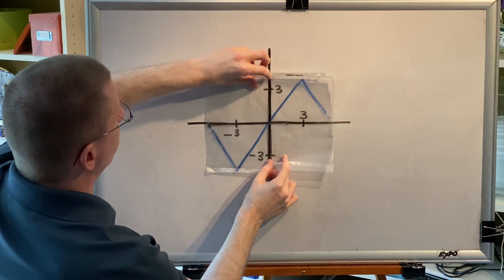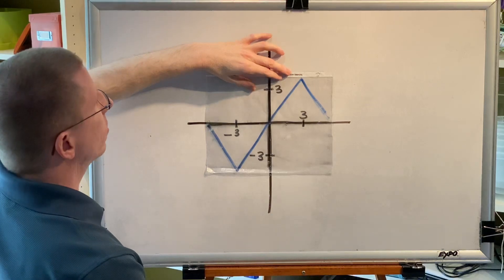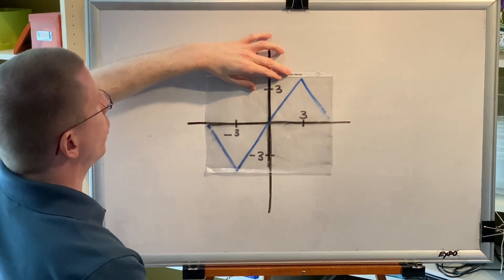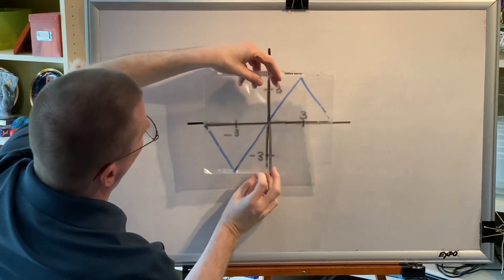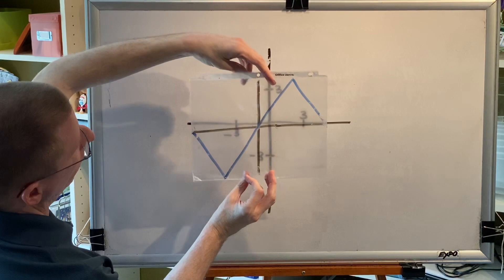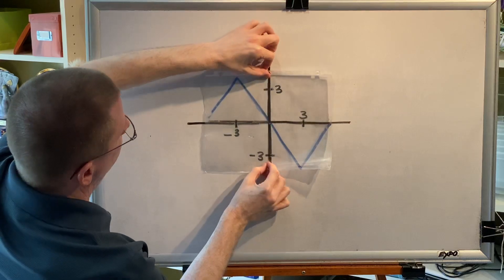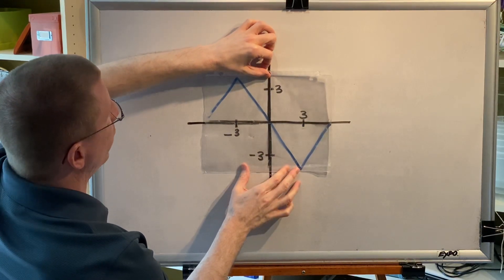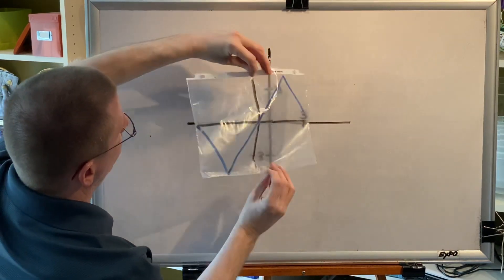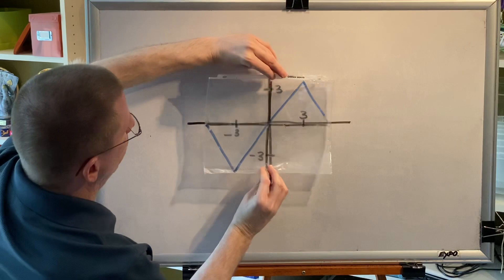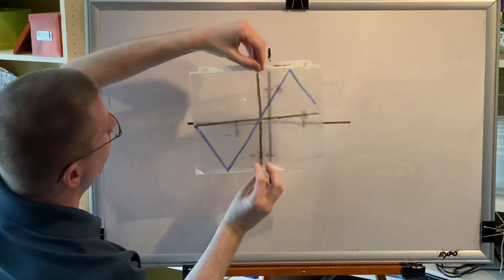Now we're going to turn our attention to y-axis symmetry. To determine if a graph is symmetric with respect to the y-axis, spin it around the y-axis and compare the graphs before and after. Before, the peak is on the right. We spin it around the y-axis, and after, the peak is on the left. The picture changed, therefore there is no y-axis symmetry.